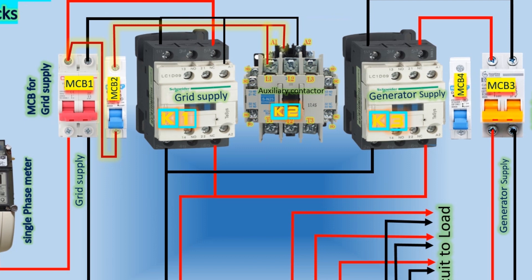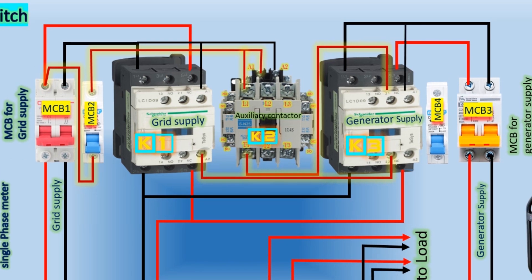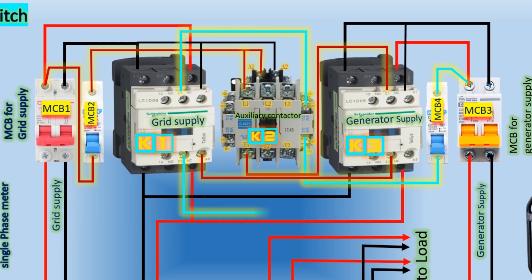A wire from the T1 terminal of the auxiliary contactor is connected to the normally closed contact of the K3 contactor, and another wire from the second normally closed contact is connected to the A2 terminal of the K1 contactor. A wire from the neutral wire of MCB3 is looped with the coil terminal A1 of the K3 contactor. A phase wire from the output of two-pole MCB3 is connected to the single-pole MCB4. The output of MCB4 is connected to the normally closed terminal of the auxiliary contactor, and a wire from the second normally closed contact is linked to the normally closed contact of the K1 contactor. A wire from the second normally closed contact of the K1 contactor is connected to the K3 coil terminal A2.